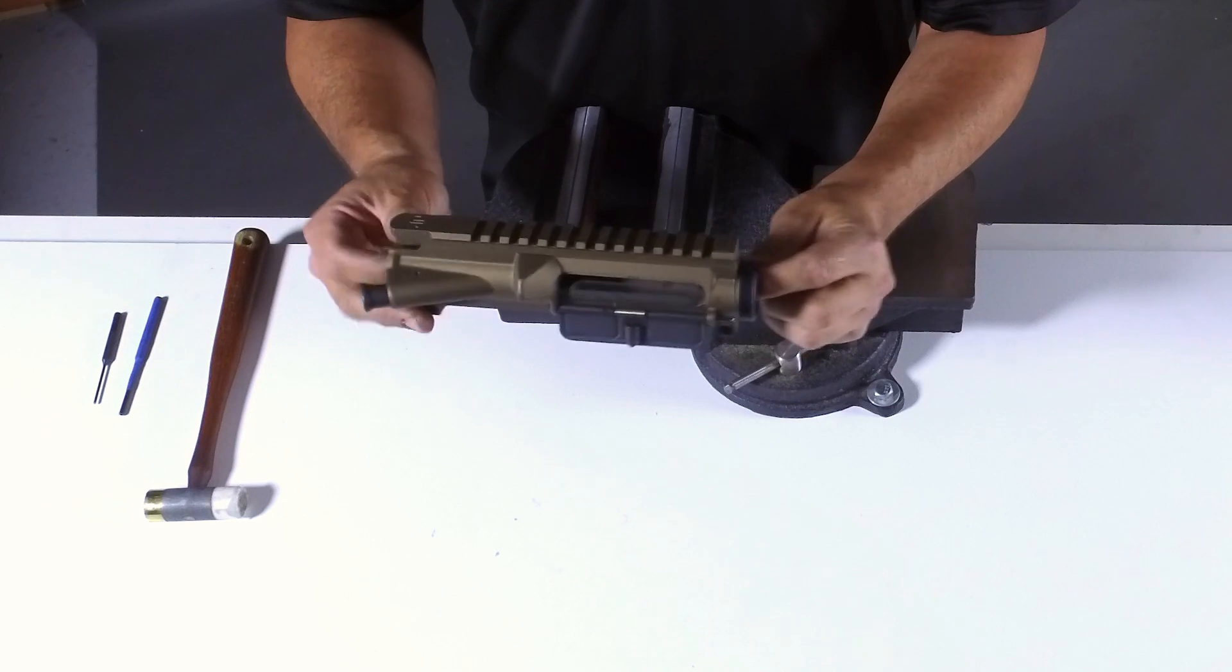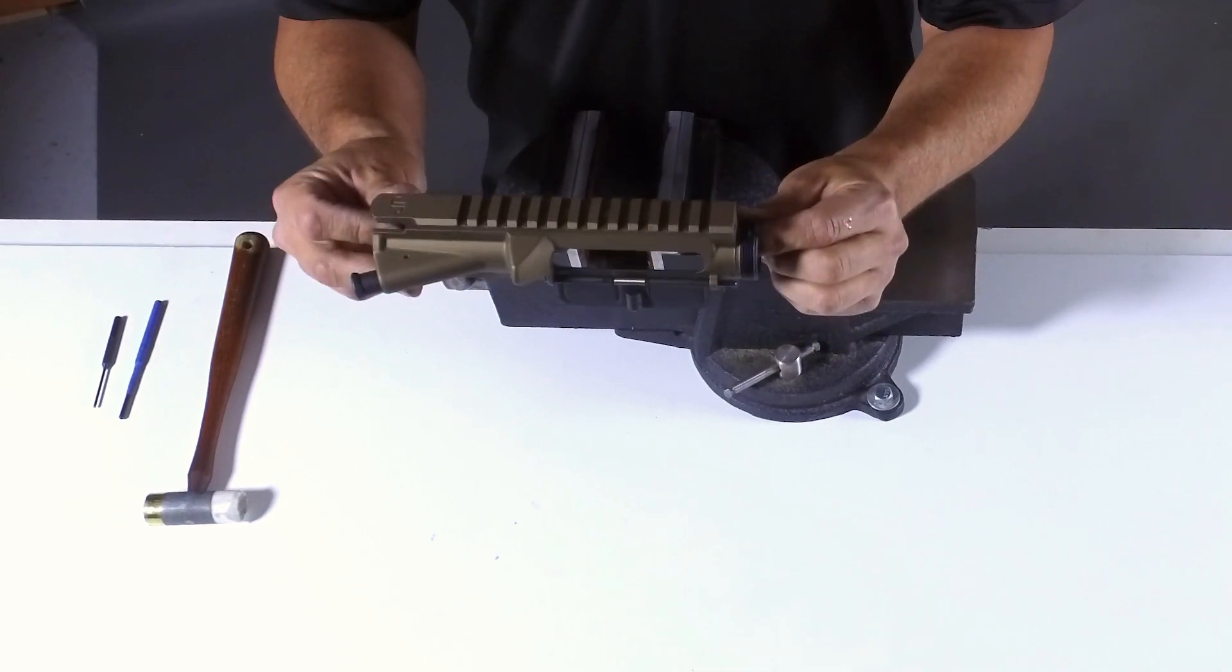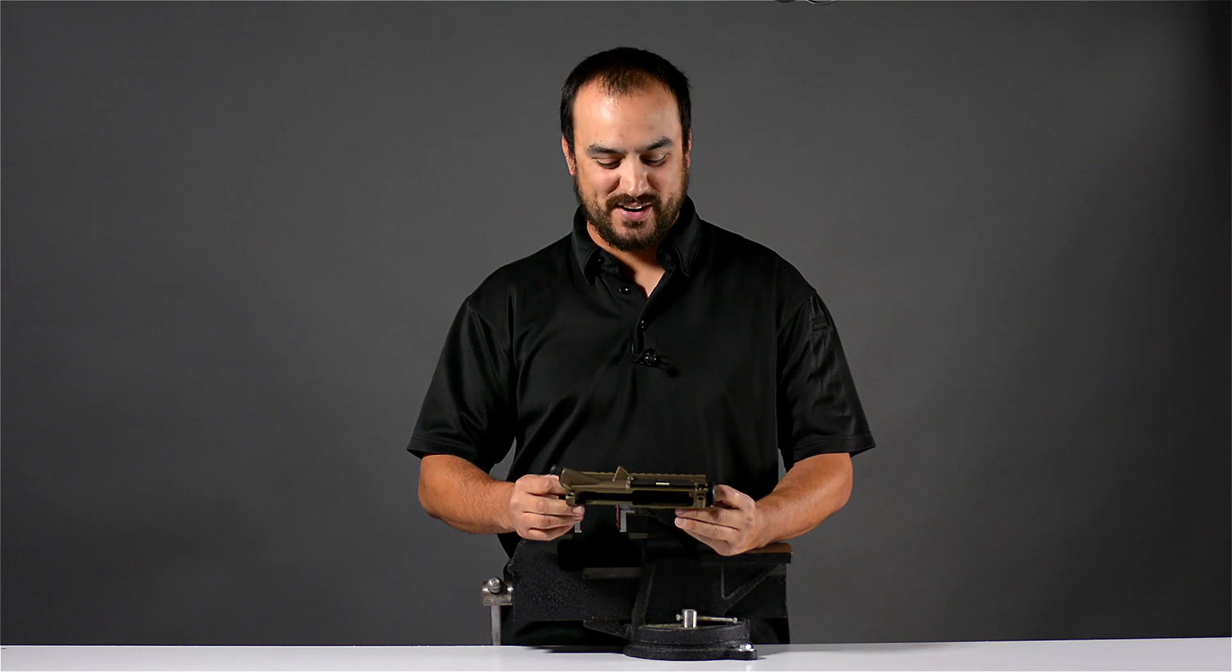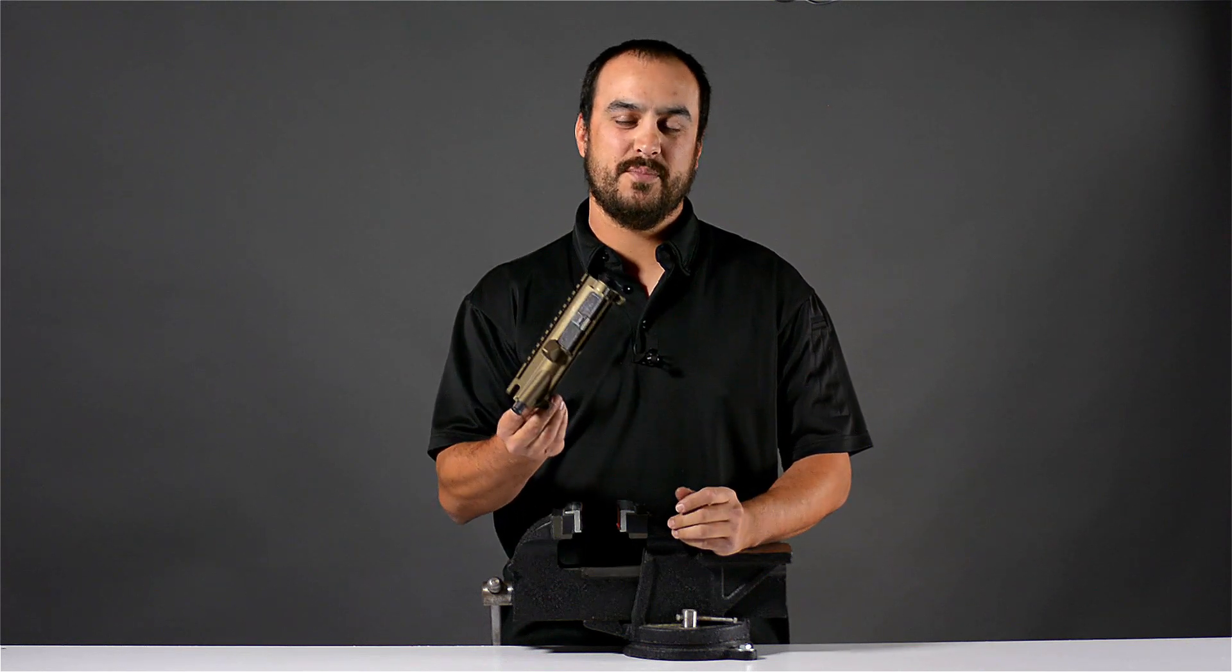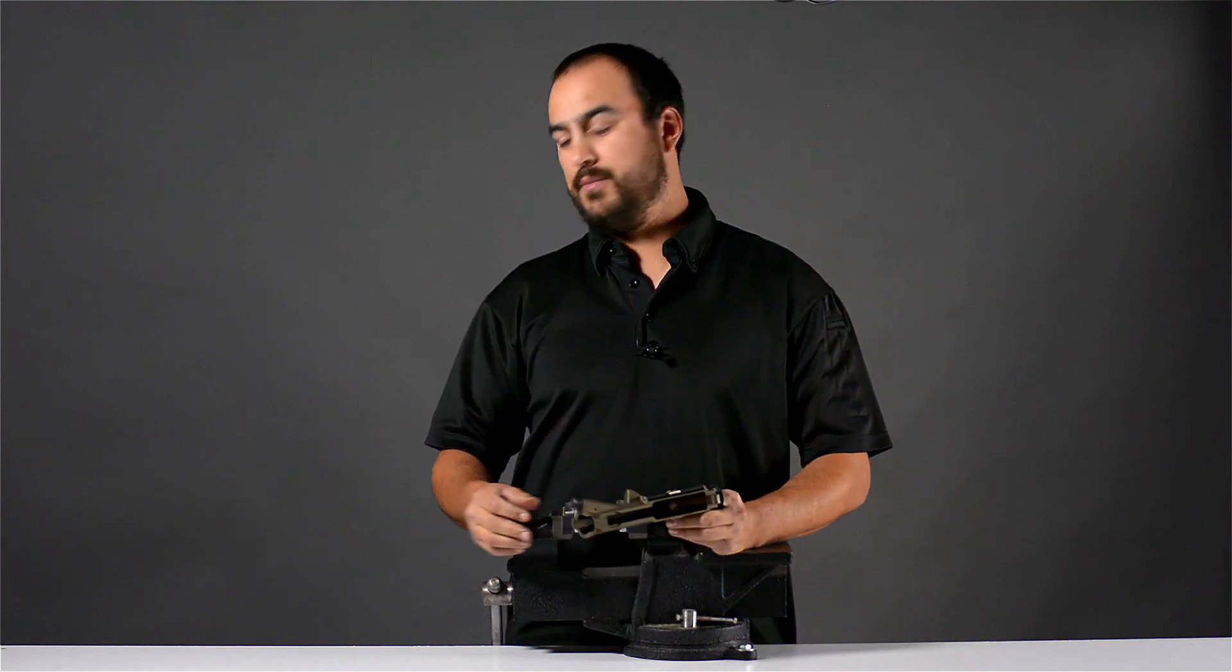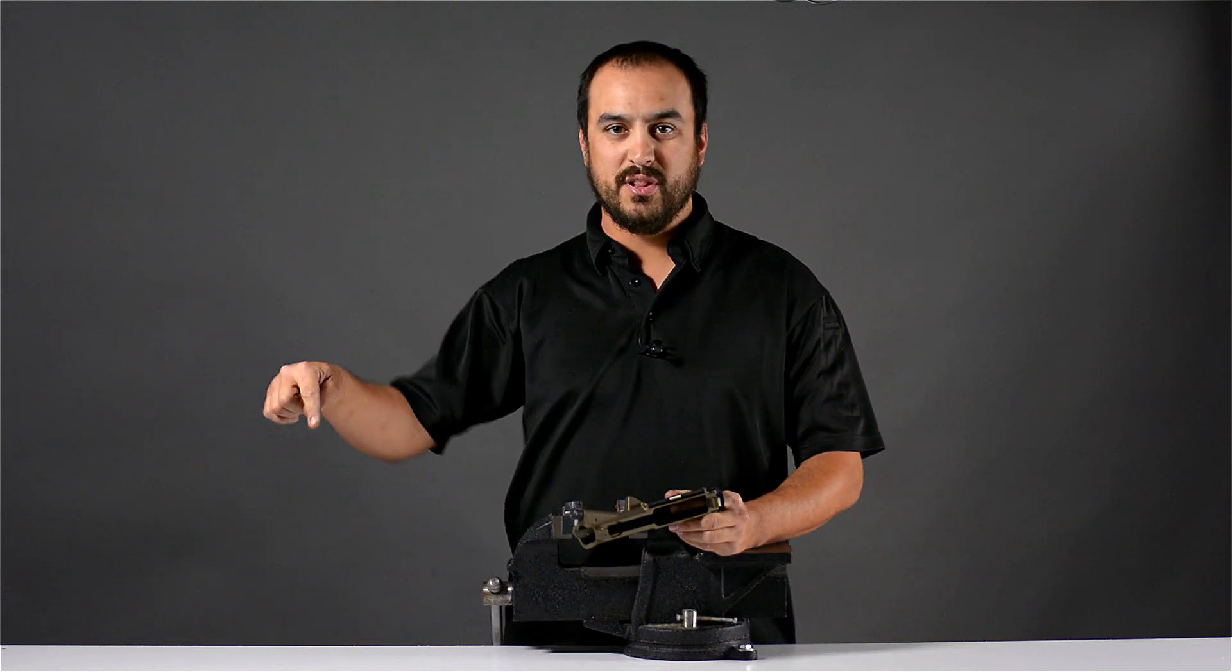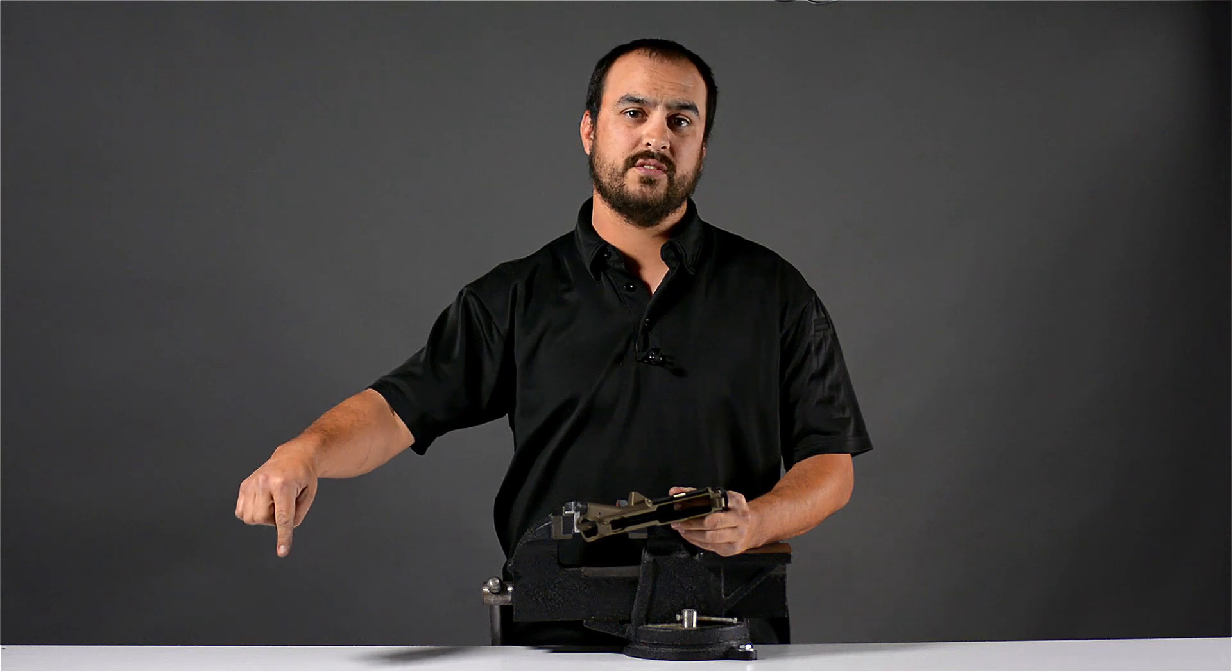That is the installation of an upper receiver. Once again this is Dustin here at JP and I hope you enjoyed your tutorial on putting the JP-15 upper receiver together. If you enjoyed this, be sure to subscribe by clicking this icon right here, the JP icon. And below there is a bell, click on that to make sure you get all the notifications when new videos come out. Thank you and have a good day.